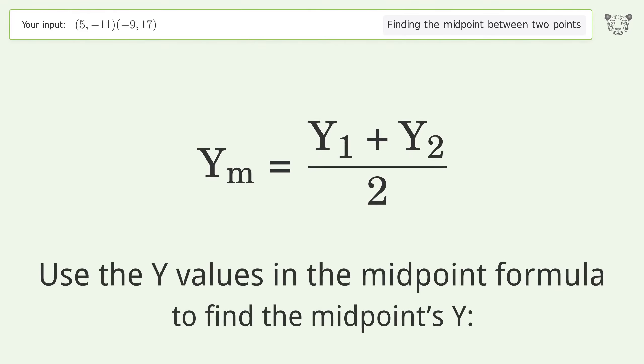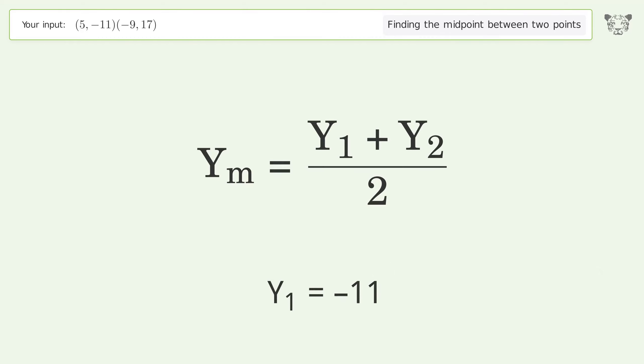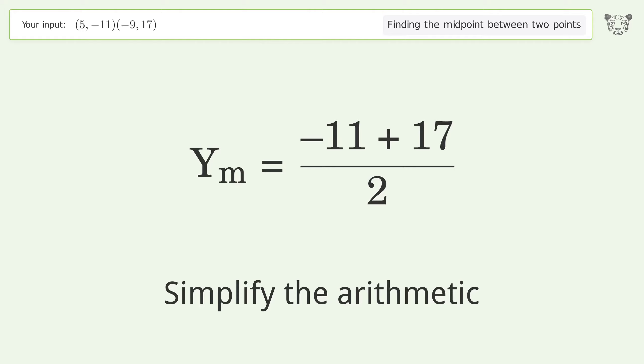Use the y values in the midpoint formula to find the midpoint's y. y1 equals -11, y2 equals 17. Simplify the arithmetic.